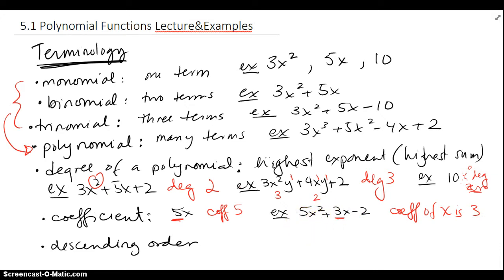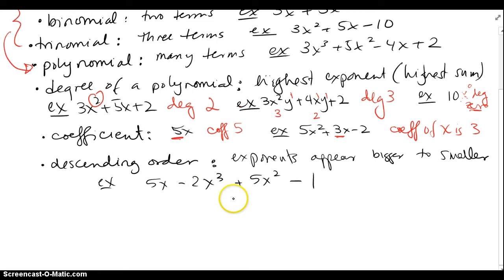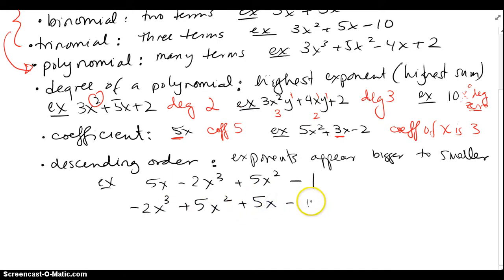Descending order means the exponents appear from bigger to smaller. For example, 5x minus 2x cubed plus 5x squared minus 1 would be out of order. Descending order would be to arrange it from the biggest exponent, then the next biggest, then just an x, then the constant term at the very end.